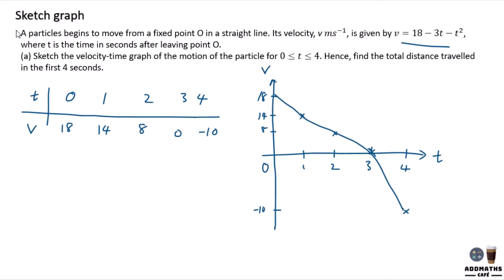And you are also required to find the total distance traveled. So from this graph, to find total distance, you have to integrate the graph area. The graph area is this side and this side to find until 4th second. And it is below the t axis, so on the third to fourth second, it will be a negative answer. So you have to modulus the answer.